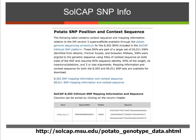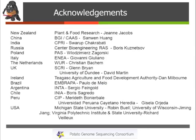Essentially you get the SNP, which super scaffold it's on, what position, and then the sequence. You can do the same thing for the 69,000 SNPs. So if you're interested in any candidate SNPs for your own work, you can just download that — it's freely available.